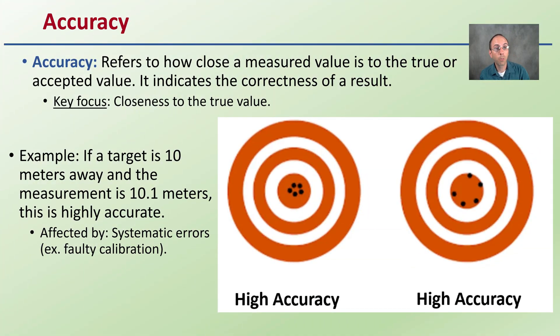Let's start with accuracy. This refers to how close a measured value is to the true or accepted value. It indicates the correctness of the result. Key focus here is closeness to the true value. High accuracy means close to that true value.